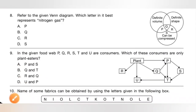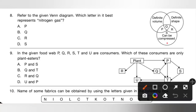Question 8: Refer to the given Venn diagram. Which letter best represents nitrogen gas? Gases can be easily compressed and do not have a definite shape or volume. S represents nitrogen gas. Option D is the correct answer.